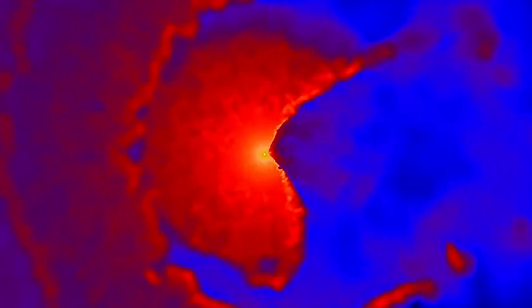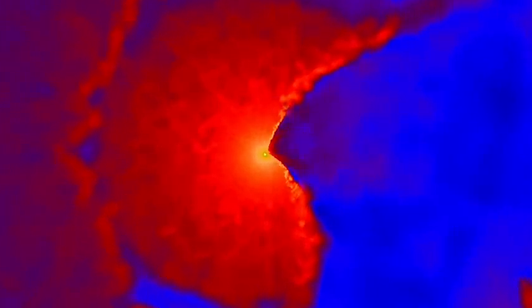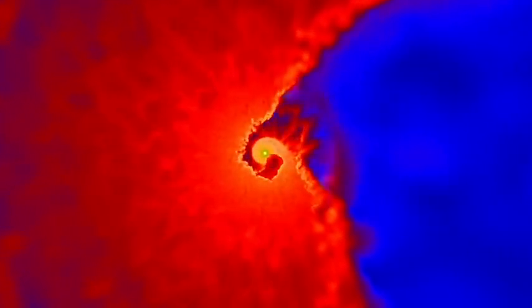Here, darker colors indicate lower gas densities around the stars, while the stars themselves appear as black circles.